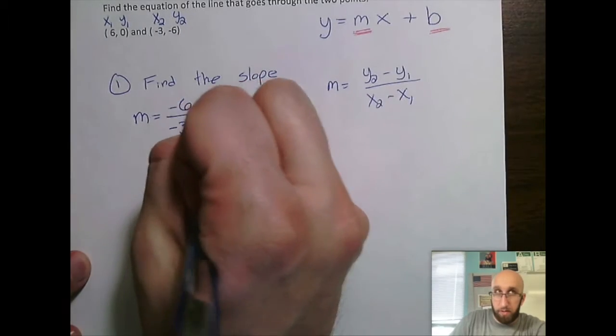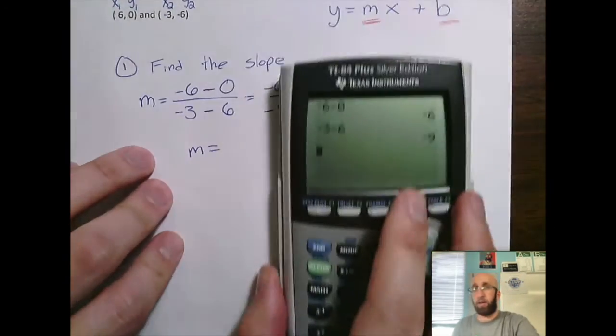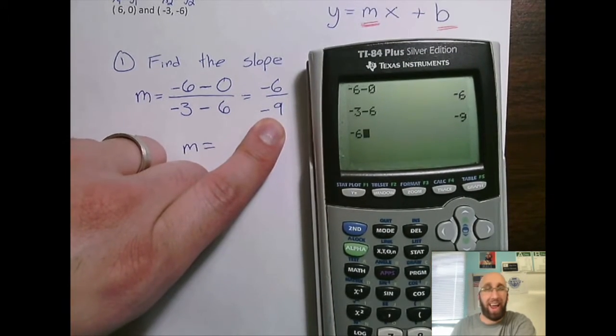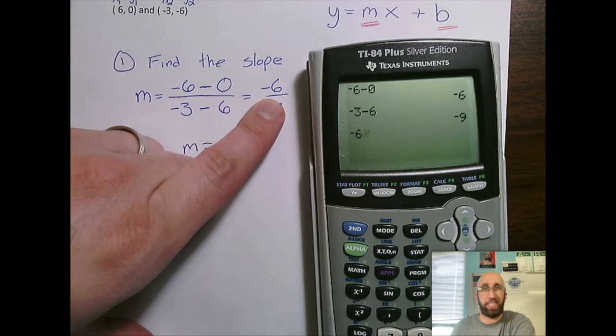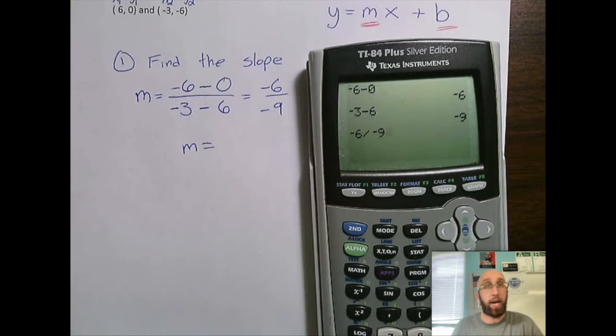What I need to do is I need to reduce this fraction, clean this up a little bit. Calculator does a fantastic job of that if you struggled with this and you don't have this skill in your arsenal. So negative 6 divided by negative 9. I want to reduce that.